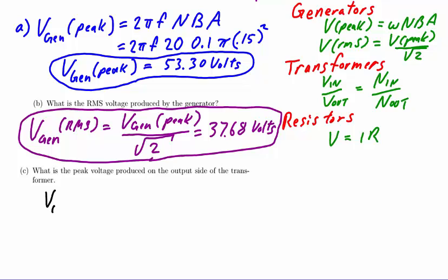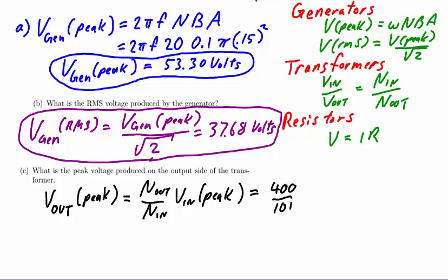Solving for the quantity we want, which is the output voltage in peak form, we get this expression. The output number of turns was 400, the input number of turns was 100, and because we wish to determine the peak quantity for the output, we put in the peak voltage on the input, and this yields the result 213.18 volts.